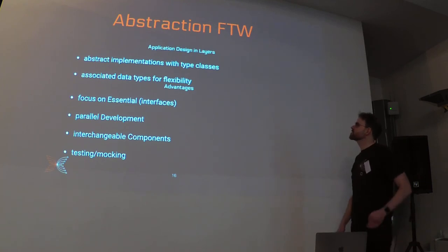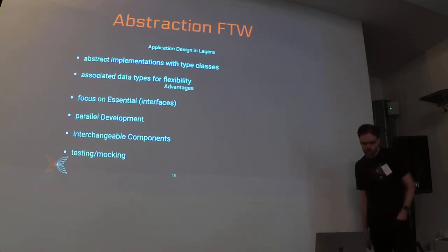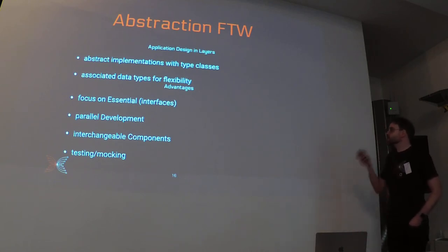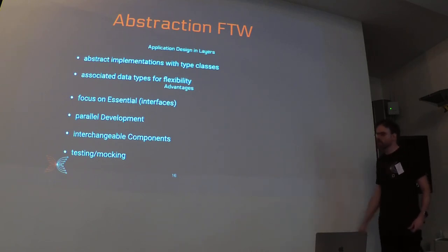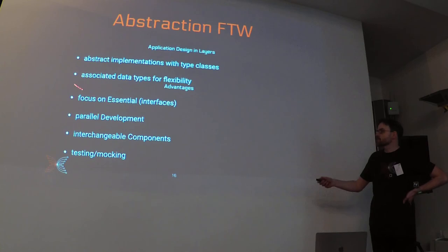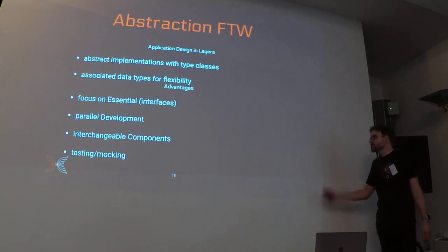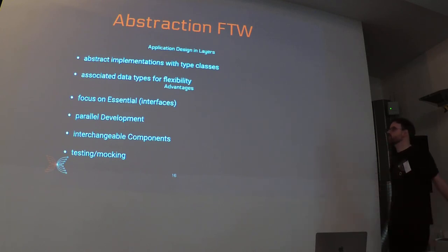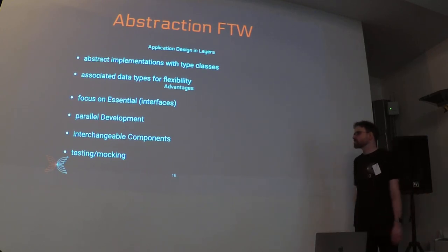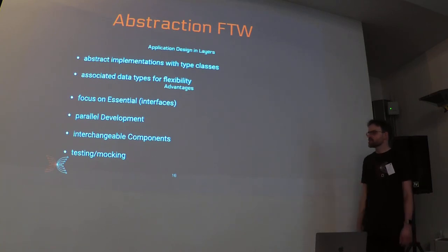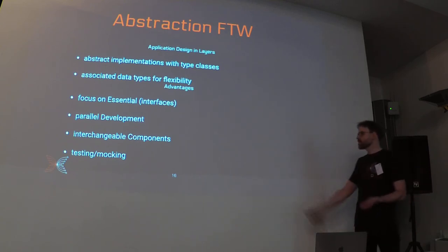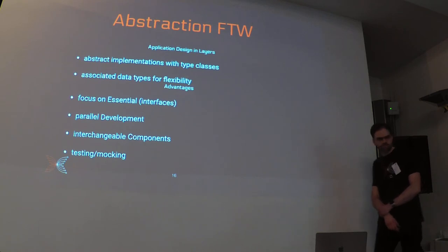So that's basically it. We've covered the Cardano system and how we use abstractions and abstract implementations to keep different components separated. The advantages are: you focus on essentials without being distracted by other components' details; you can develop components in parallel; you can swap in components for testing or when there are advances or vulnerabilities detected. This is very convenient for both testing and production upgrades, and applies not only to the crypto layer but also the ledger layer and everything else.